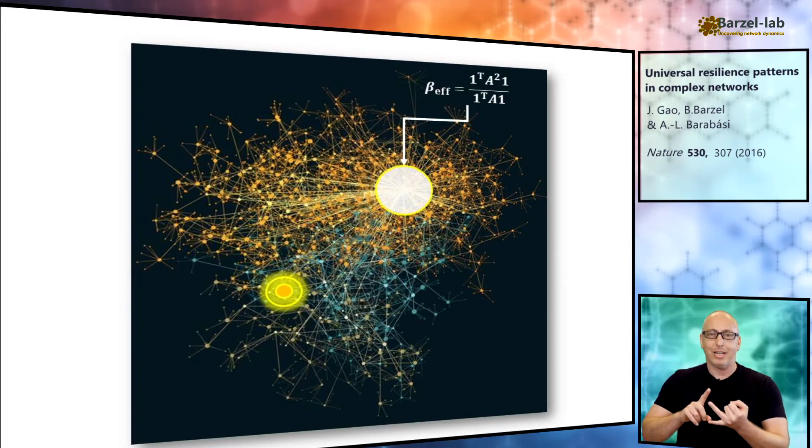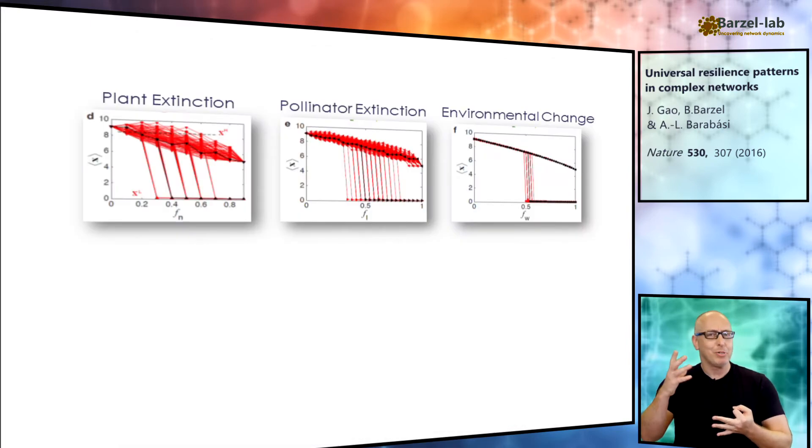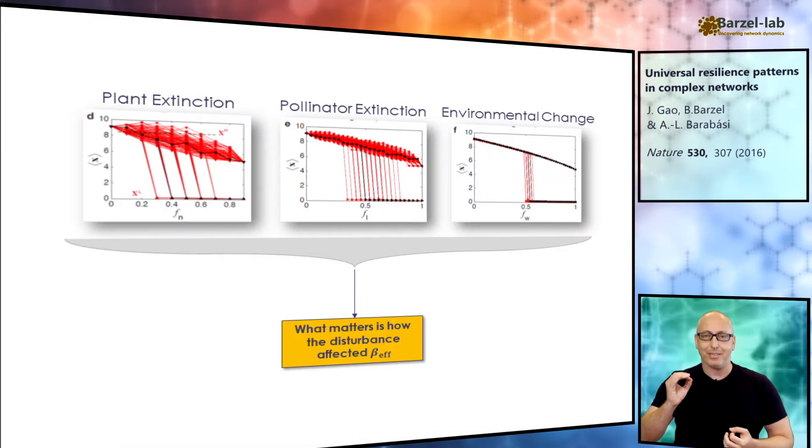Whether you remove a node, change a link weight, or make any other perturbation to your network, what matters is how this disturbance changes the effective parameter beta.